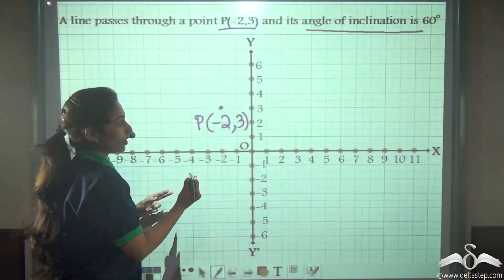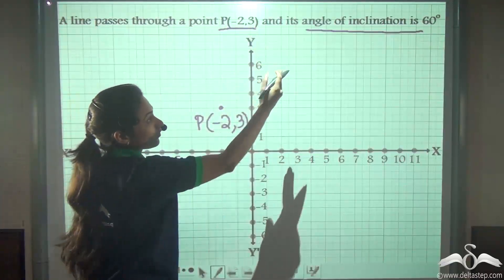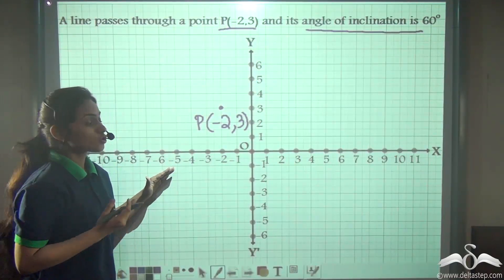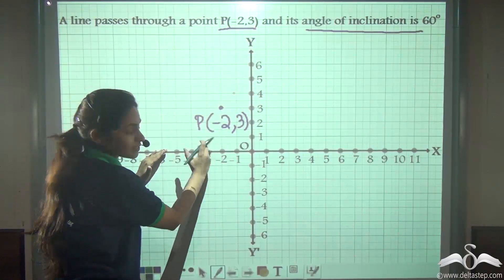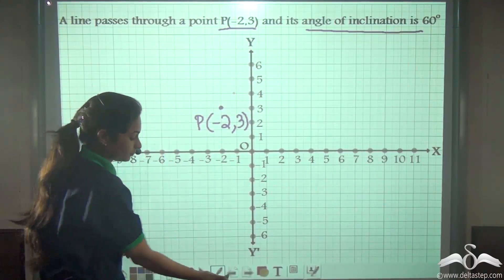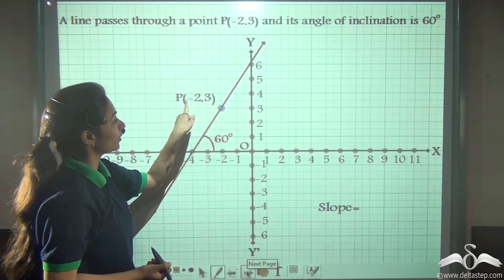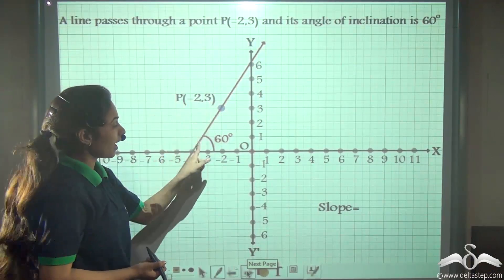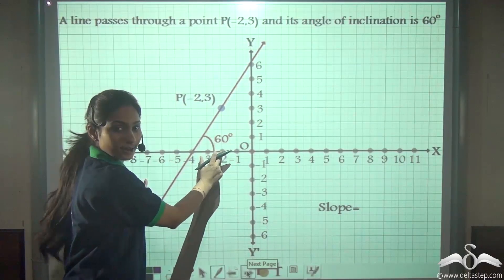Now we have to draw a line that passes through this point and has an angle of inclination 60 degrees. So with the help of the protractor, you can draw a line here measuring 60 degrees. So you get this line which passes through the point P, that is -2, 3, and has the angle of inclination with the x-axis as 60 degrees.